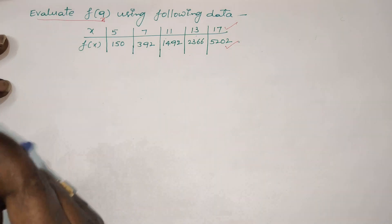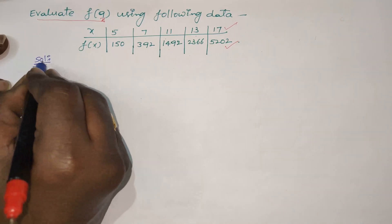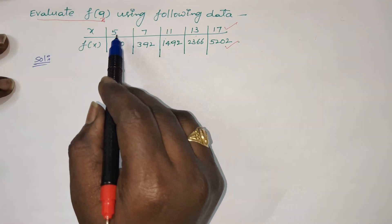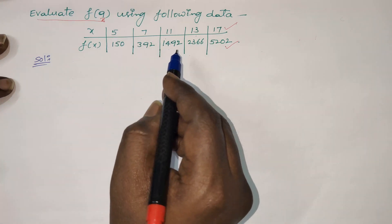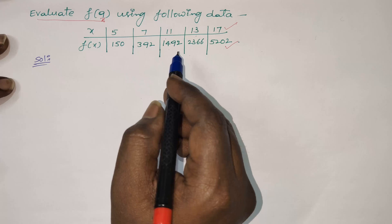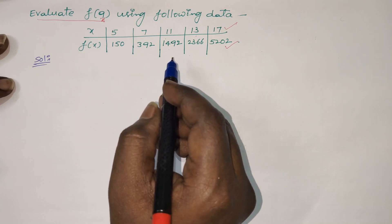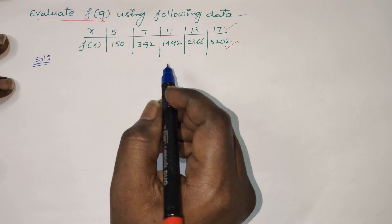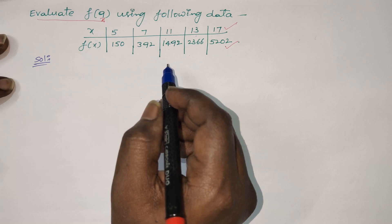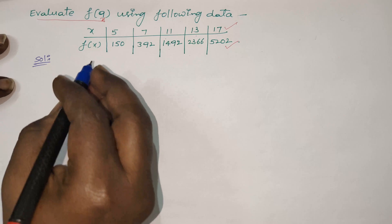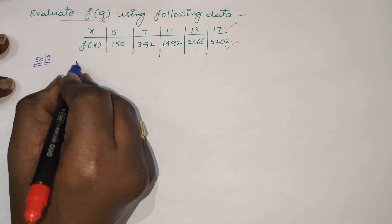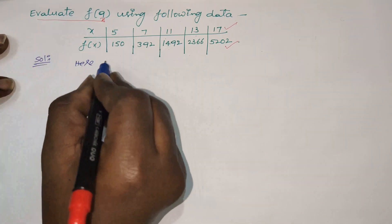Looking clearly at the data, the x values are not separated by an equal difference. So the given data has unequal spacing. Whenever given data has unequal parts, to find the unknown function value we have to use Lagrange's interpolation formula. Do not use Newton's forward or Newton's backward formula when the given data has no equal spacing.